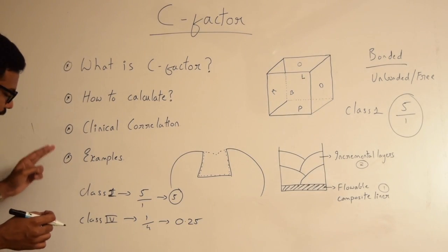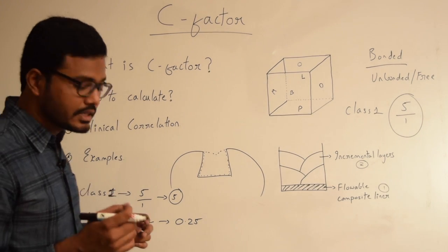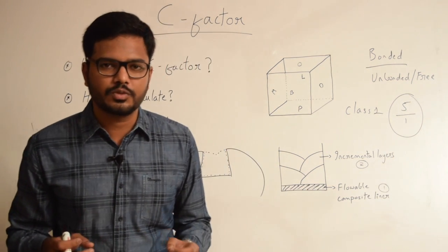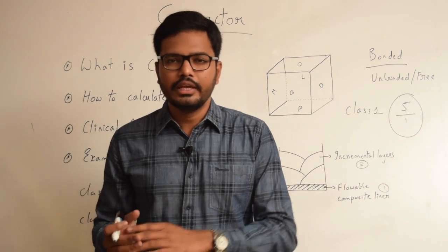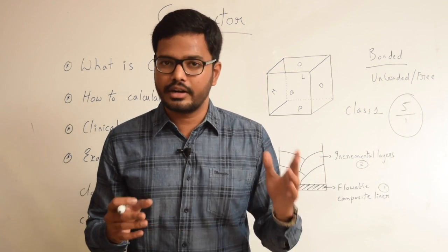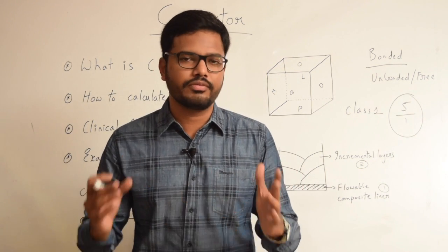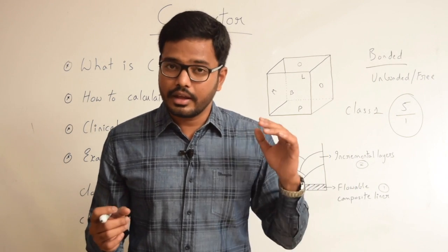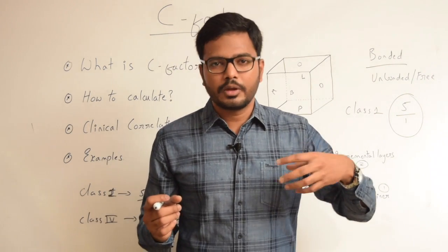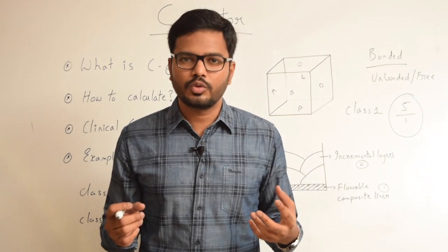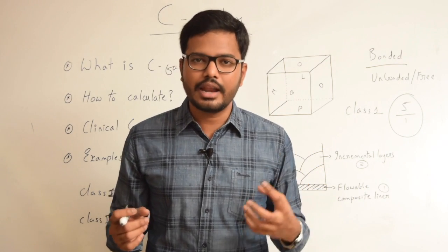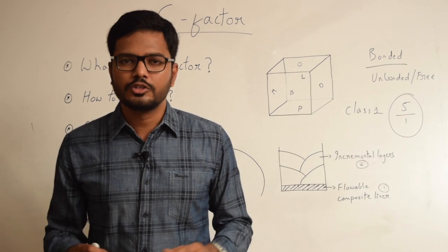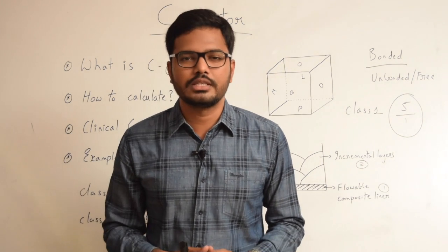C-factor is highest in a class 1 cavity, which is 5, and least in case of a class 4 cavity, which is 0.25. In case of a class 5 cavity, if it's a traditional or conventional cavity with all definite walls, C-factor is very high at 5. And if the cavity is due to an abrasive lesion, the C-factor is 1. This is in brief about the C-factor.